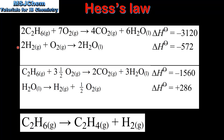In our next reaction we have the enthalpy change for the combustion of two moles of hydrogen. In this equation the hydrogen is in the reactants, however in our final equation the hydrogen is in the products. We also have two moles of hydrogen in this equation and one mole of hydrogen in the final equation. So we need to reverse the equation and halve the coefficients, which gives us one mole of water, one mole of hydrogen and half a mole of oxygen. Because we reversed the reaction and halved the coefficients we need to change the sign from negative to positive and halve its value.